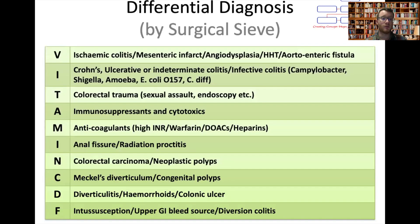For bleeding per rectum using the surgical sieve: vascular causes as mentioned above; infective and inflammatory causes including infective colitis — Campylobacter, E. coli, and C. diff — usually presenting with bloody diarrhoea; then trauma, autoimmune, metabolic, iatrogenic, neoplastic, congenital, and degenerative causes.